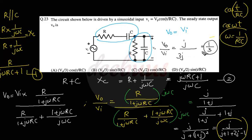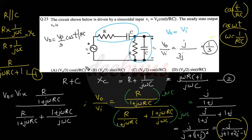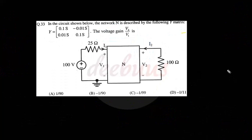So v₀/vi = 1/3, meaning the output voltage v₀ = (Vp/3)·cos(t/RC). The answer is (a): Vp/3 · cos(t/RC).